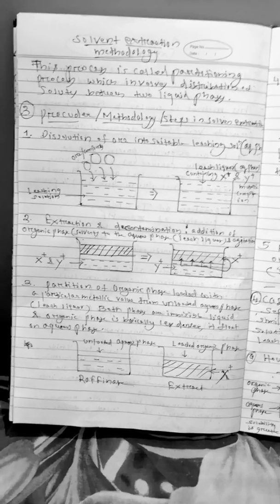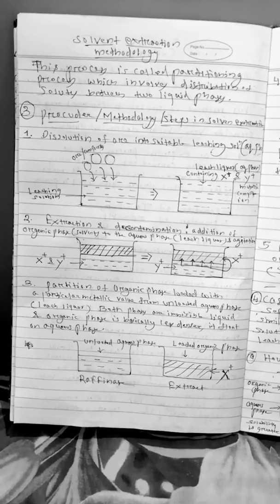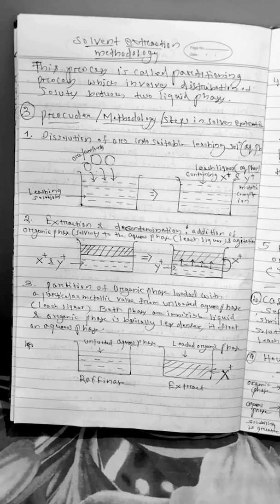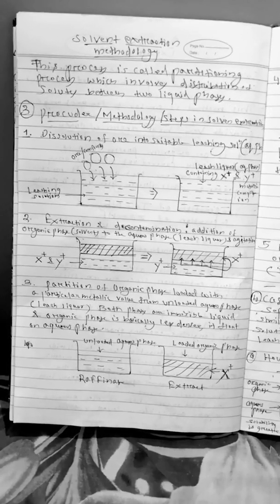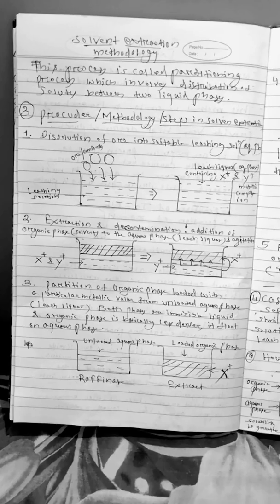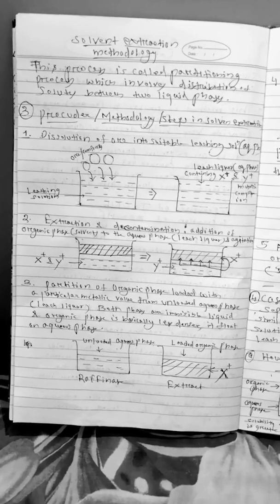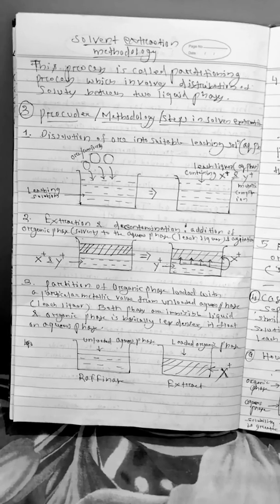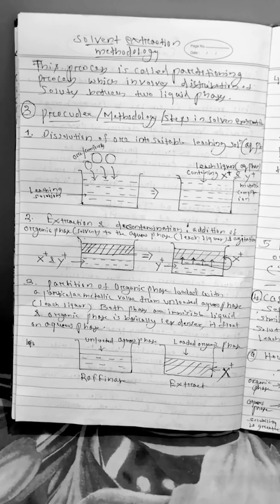So here you can see x plus and y plus both are the metallic values present in the aqueous phase but when the organic phase is added and it is mixed and agitated, the x is moving into the organic phase leaving y in the aqueous phase.